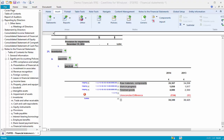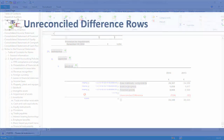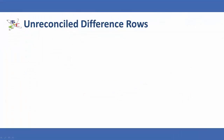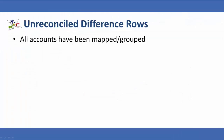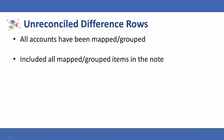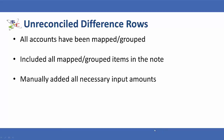If a discrepancy greater than the rounding tolerance exists, users should check the following: all accounts have been mapped and grouped, they have included all mapped and grouped items in the note, and they've manually added all necessary input amounts.